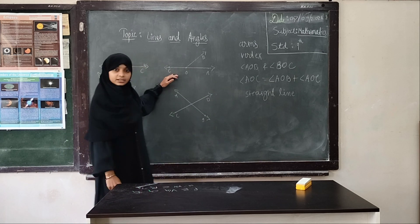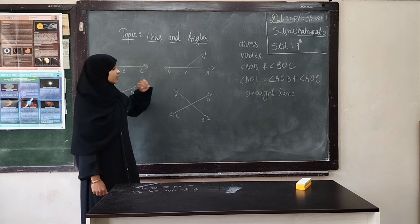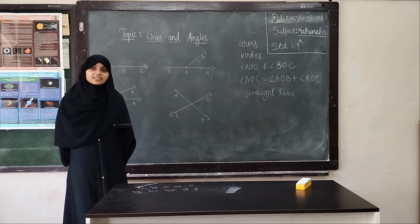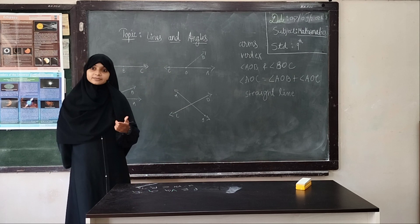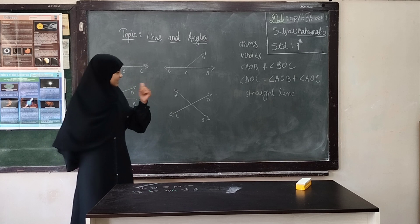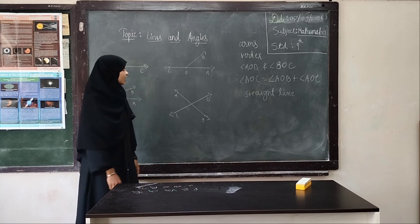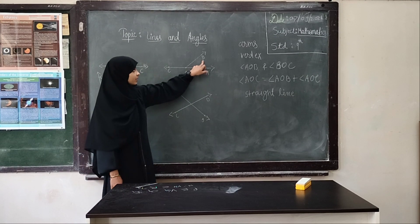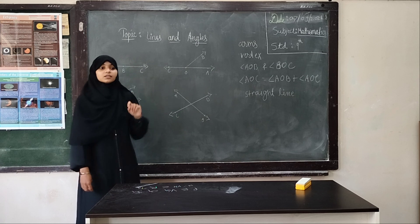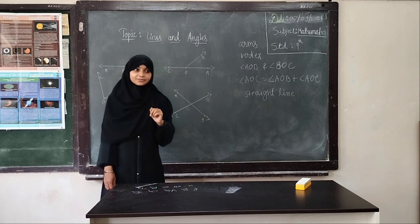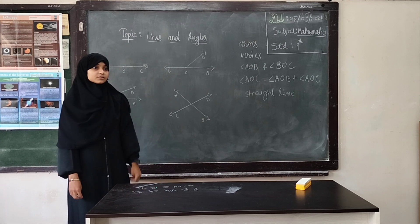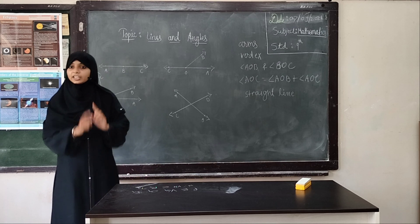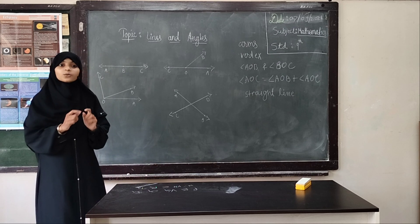In the third figure, how many pairs of linear angles are there? There are two pairs of linear angles. Name them. Angle AOB and angle BOC. What do you say about angle AOB and angle BOC? Angle AOB and angle BOC are adjacent angles. So there is a difference between adjacent angles and linear pair of angles. Listen to me carefully.